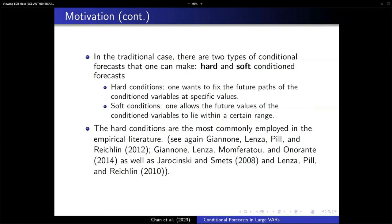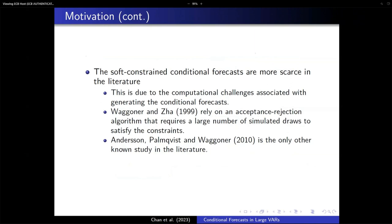In the traditional case, there are two subtypes: hard and soft conditional forecasts. The example where we're forecasting GDP conditioning on the policy rate being exactly 2% is a hard constraint — the conditioning variable is fixed to a particular value. However, if we want to condition on the policy rate being within an interval, that's a soft constraint. Within the literature, the hard constraint is the most popular, partly due to the computational challenges associated with generating soft conditional forecasts.